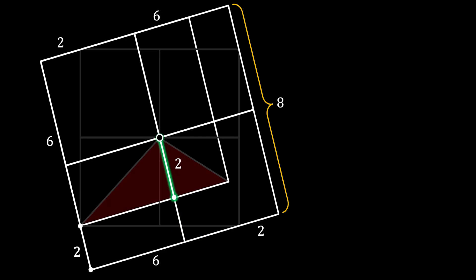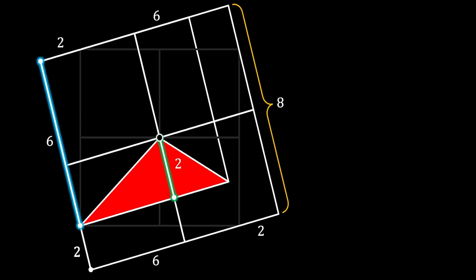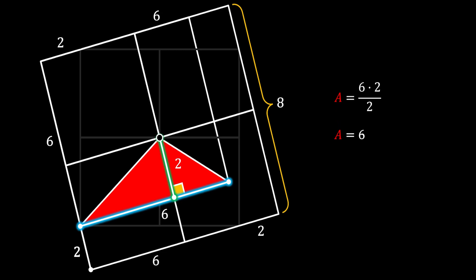Going back to the wanted red triangle, the green line represents its height, which is 2. The side of the smaller tilted square is 6, which is the base of the red triangle. The area is therefore (6 × 2) / 2 = 6 square units.